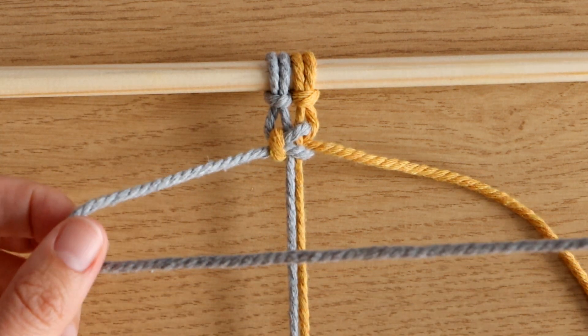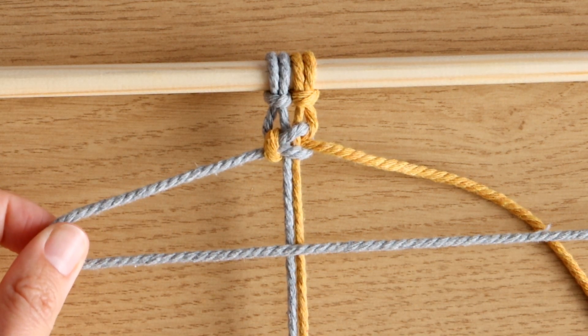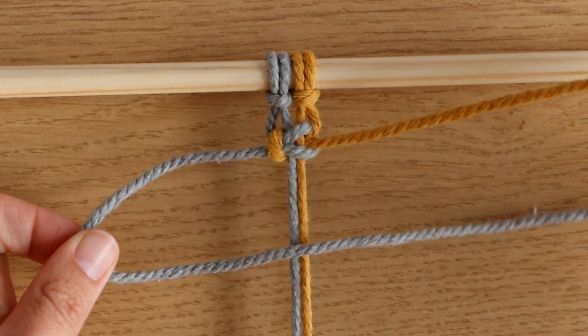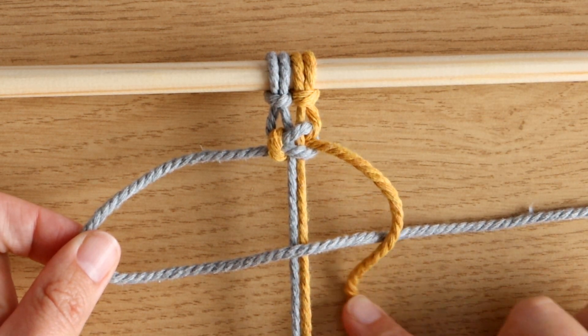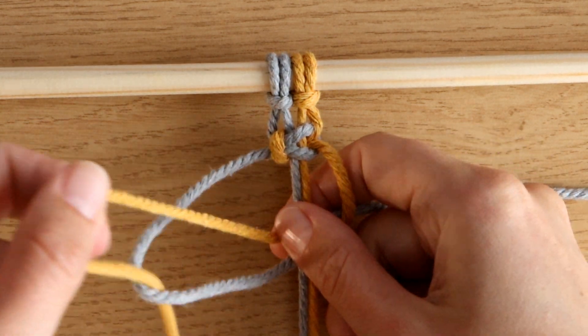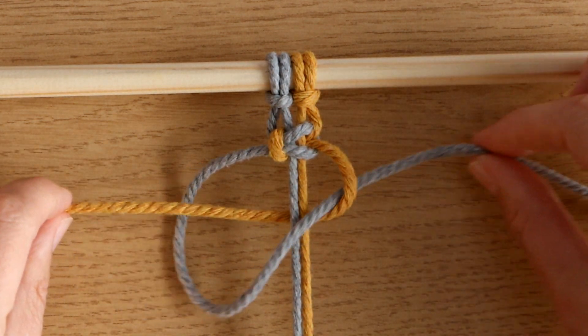So I'm going to take my left-hand thread, lay that across all the top of the other threads, take my right-hand thread over the top of the left, and then poke that tail underneath everybody and out through the gap, and once again tighten it up.